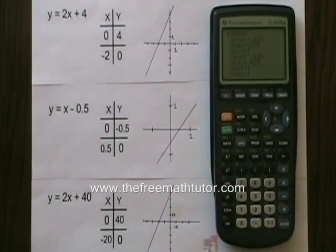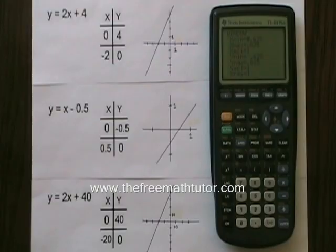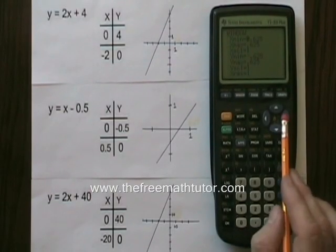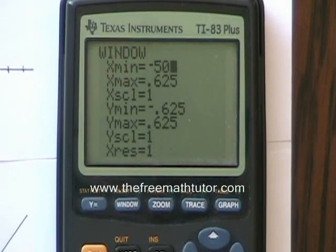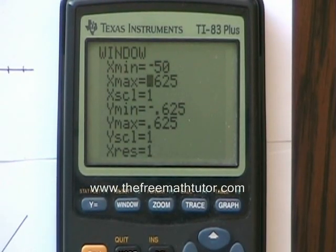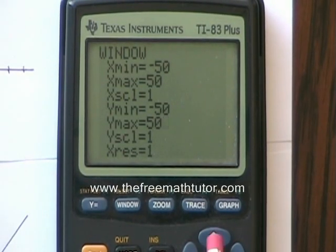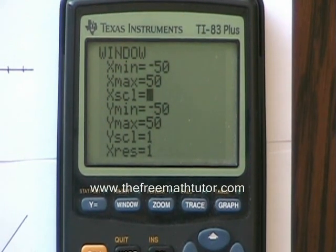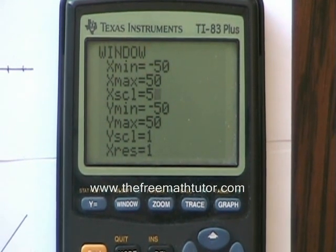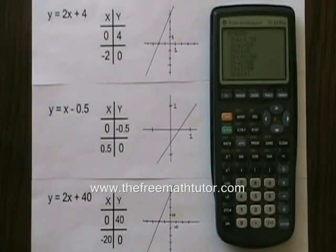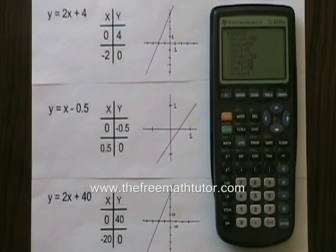I press window. And instead of negative 0.625 and 0.625, I'm going to enter negative 50 and positive 50. I'm also going to change my x scale and y scale from 1 to 5. If I don't do that, then I will have too many little dashes on my axes and I won't be able to see the dashes and count them very well.